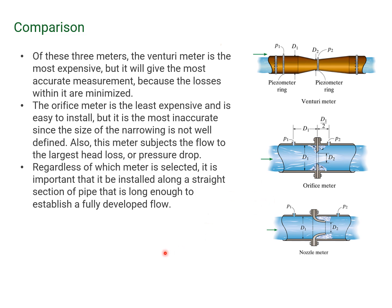Regardless of which meter is selected, it's important to be installed along a straight section of pipe that is long enough to establish the fully developed flow. This is the end of chapter 10, and I'll see you in the next lectures.